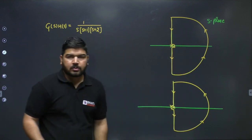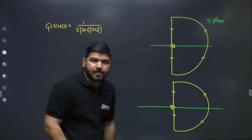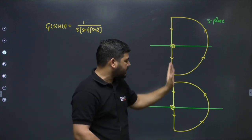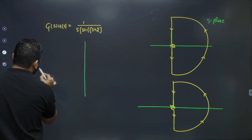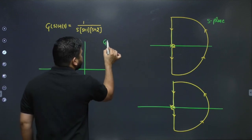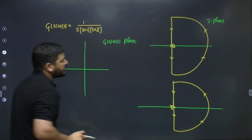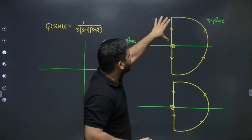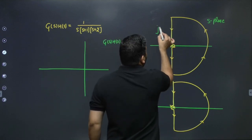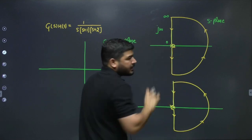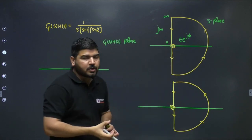In both cases, closed-loop stability will remain the same — only the number of encirclements of minus one will change. The full contour has four parts: the jω axis (ω from ∞ to 0), a small semicircle ε·e^(jφ) with ε→0 and φ from π/2 to −π/2, then jω (ω from 0 to −∞), and a large semicircle R·e^(jθ) with R→∞.